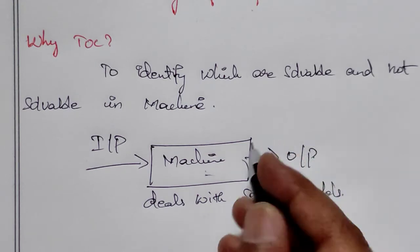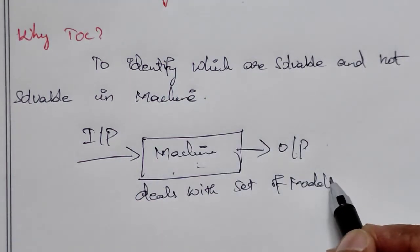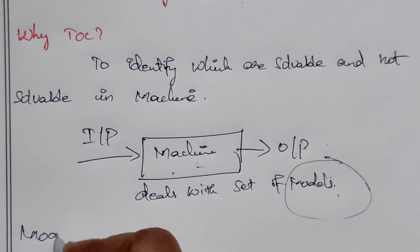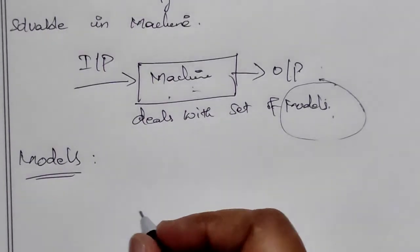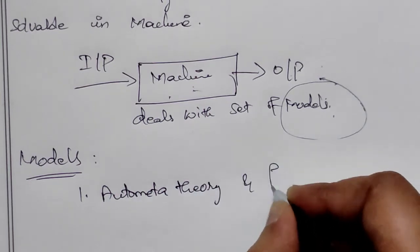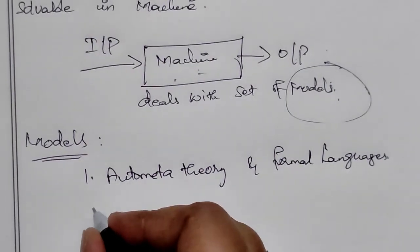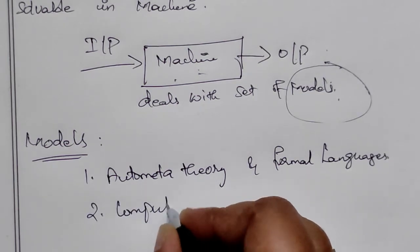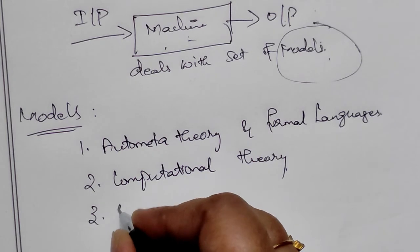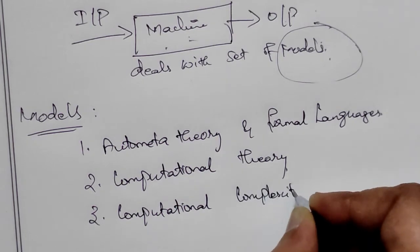We have different models. The first model is Automata Theory and Formal Languages. The second one is Computational Theory. The third one is Computational Complexity Theory.